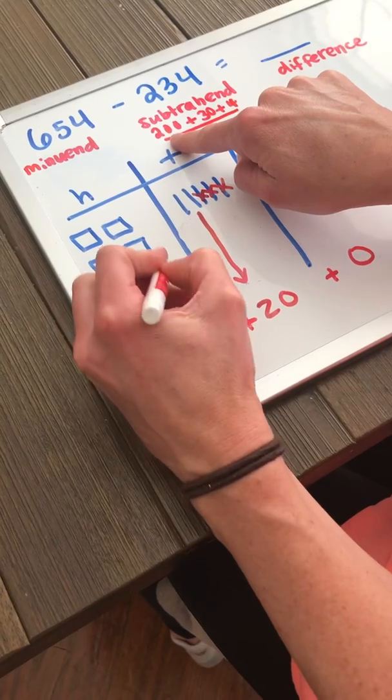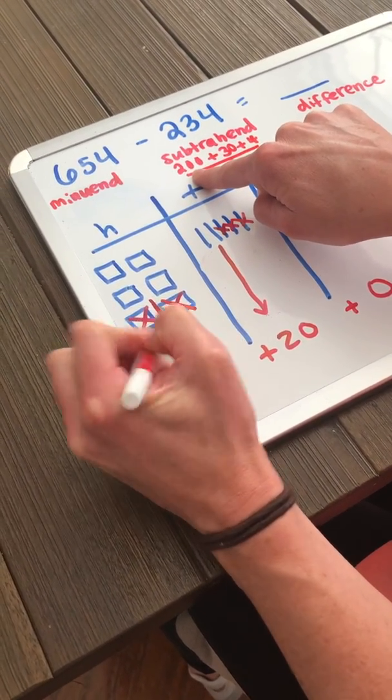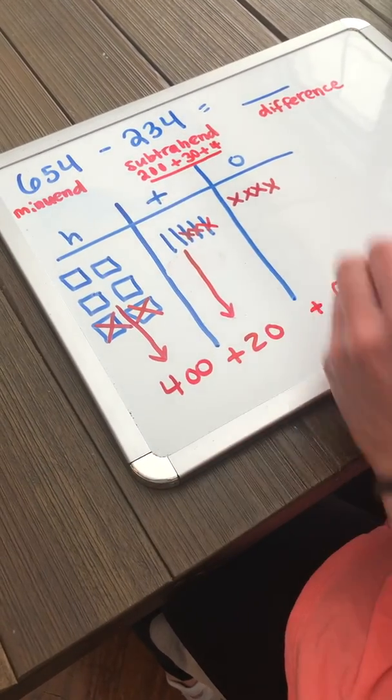And then I'm going to take away two hundreds. And when I take away two hundreds, I have one, two, three, four hundreds left. And my answer is 420.